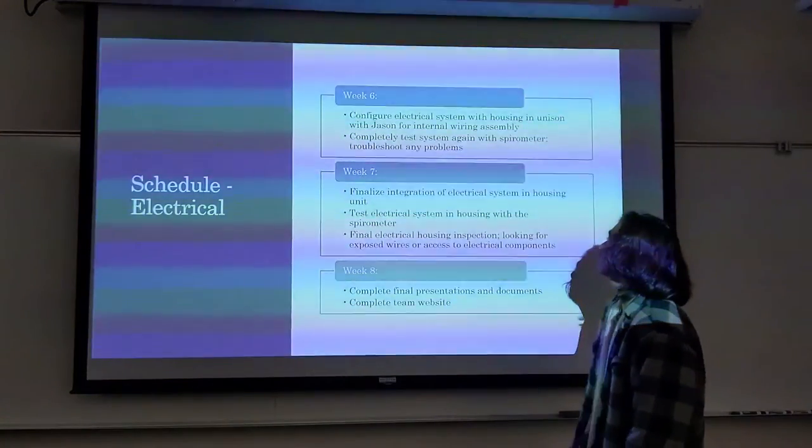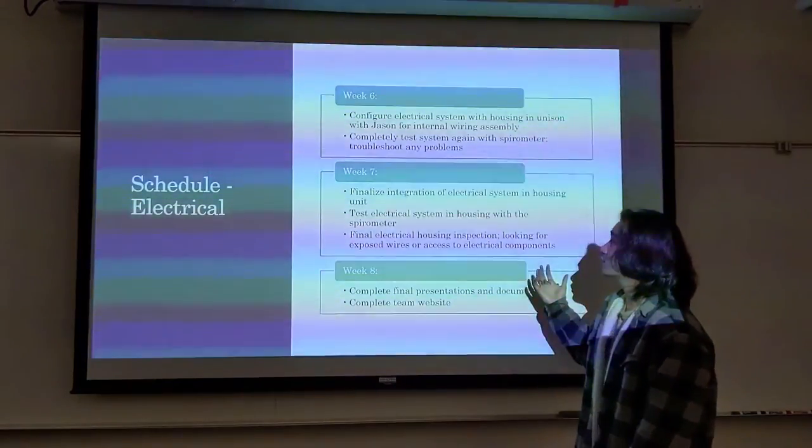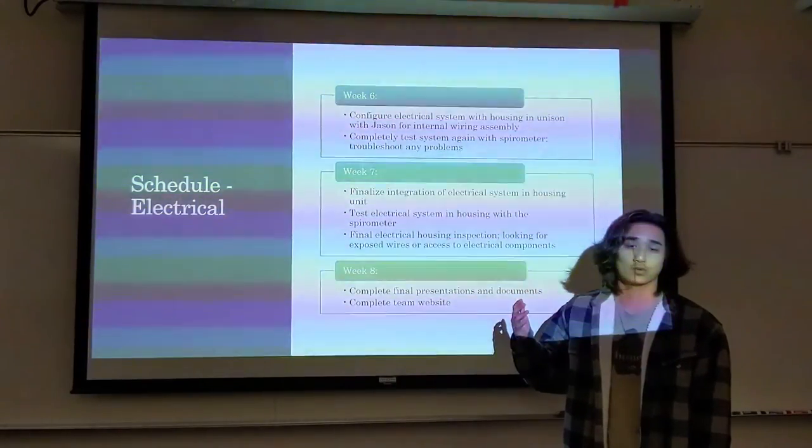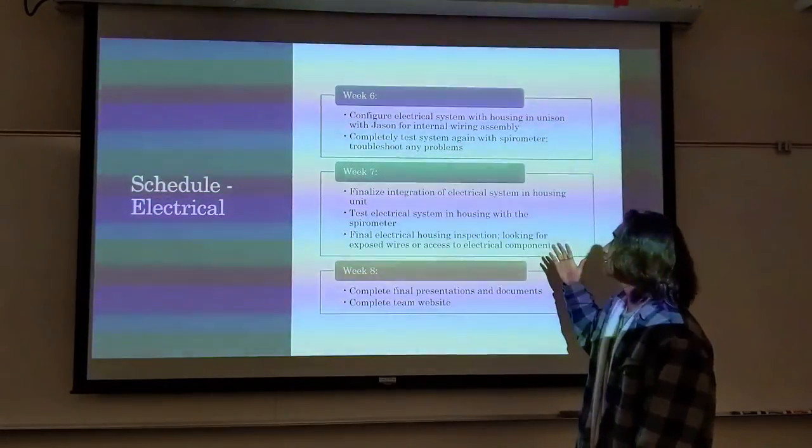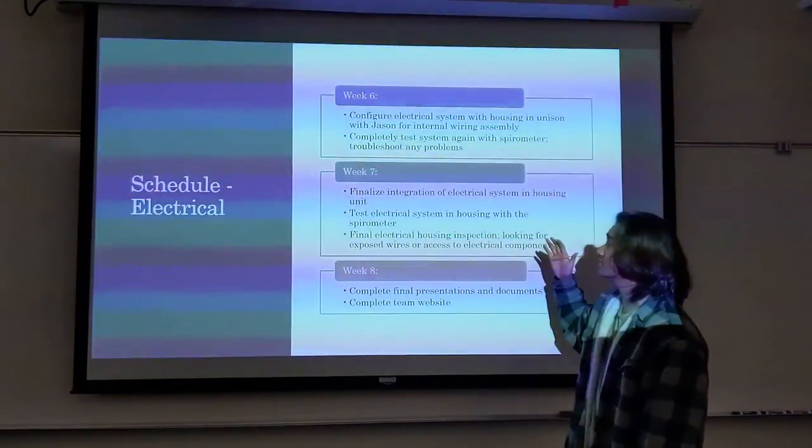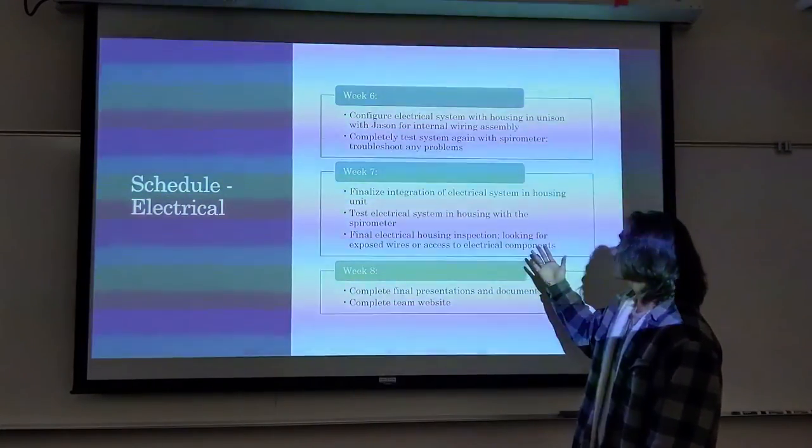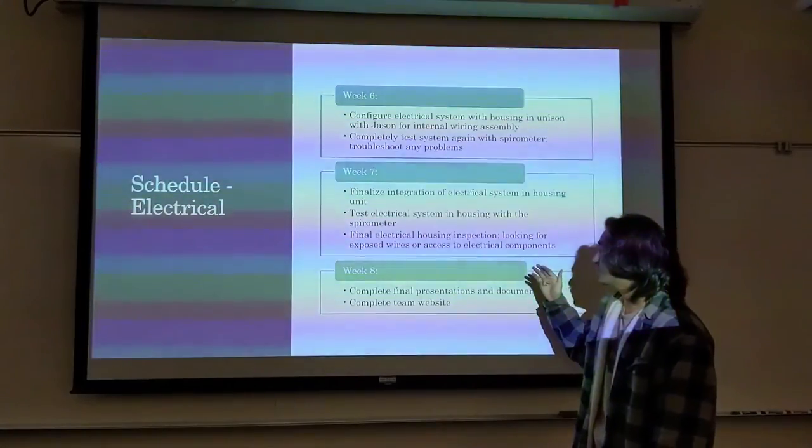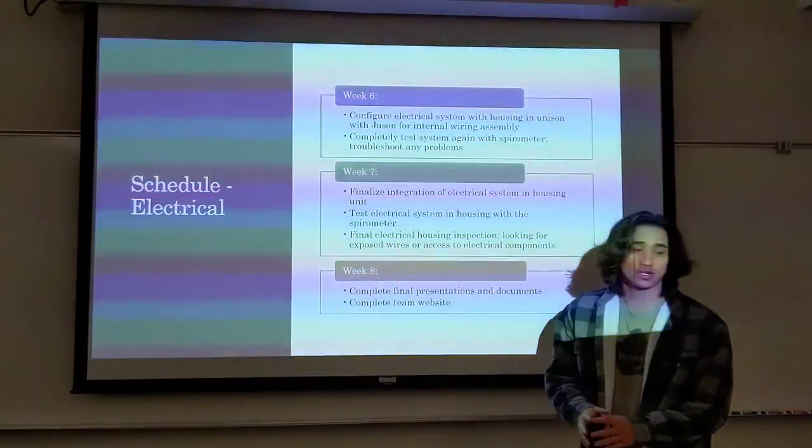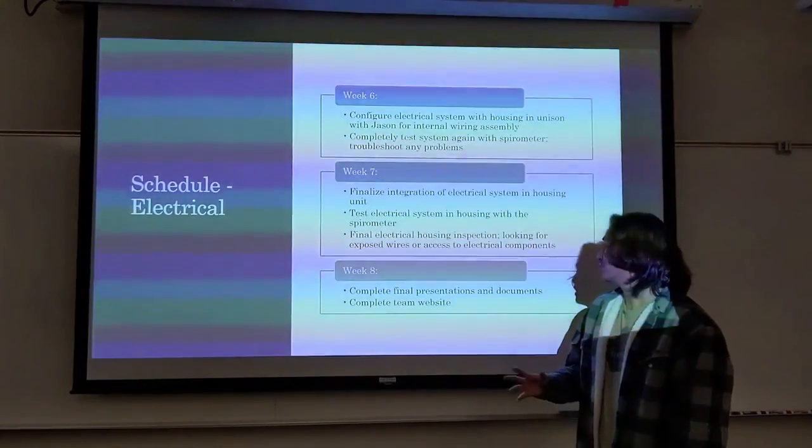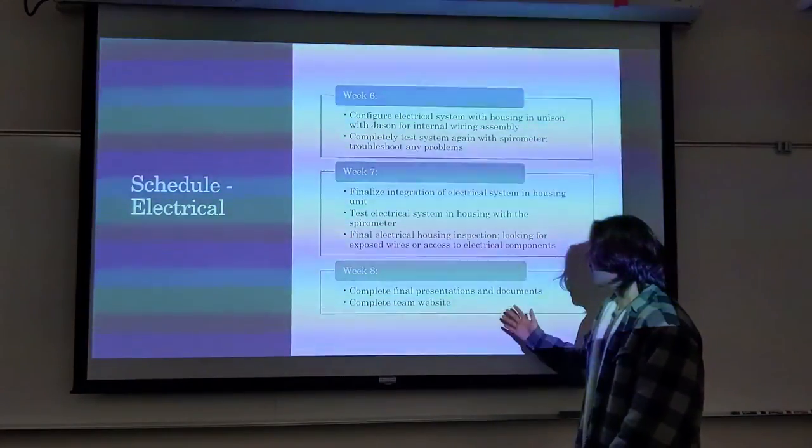For week six, we plan to fully configure this electrical system within the housing. We will be working on this from week four when we actually get the PCB board tested, but this is the last week we want it to be done, and we want it to completely test the system again with the spirometer by then. This final integration will be done by week seven, a final test, and then a final inspection of the electrical housing. We will be working on the wires within to make sure that none of it is exposed and none of the other electrical components are exposed as well. Then week eight, we will be completing final presentations and completing the team website based on what electrical things need to be added.